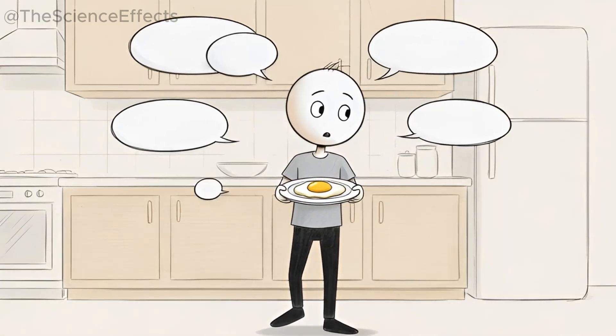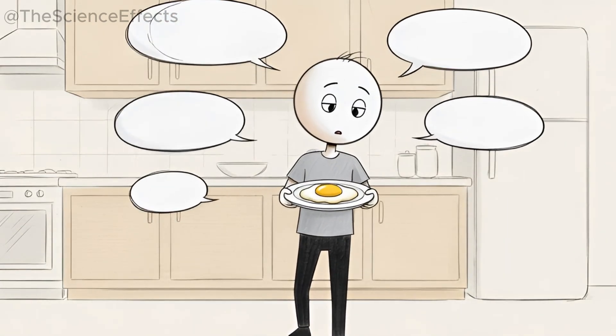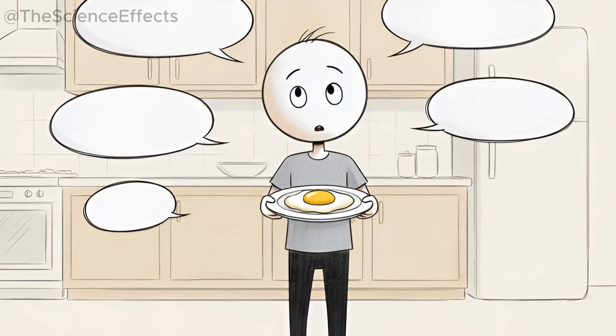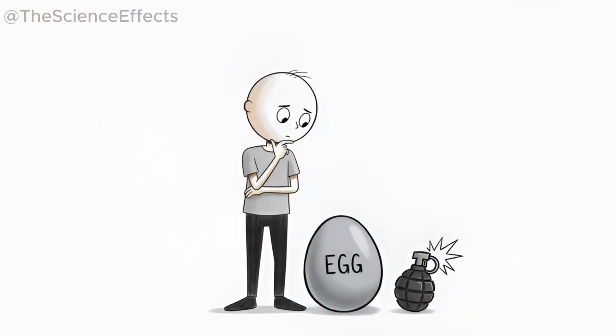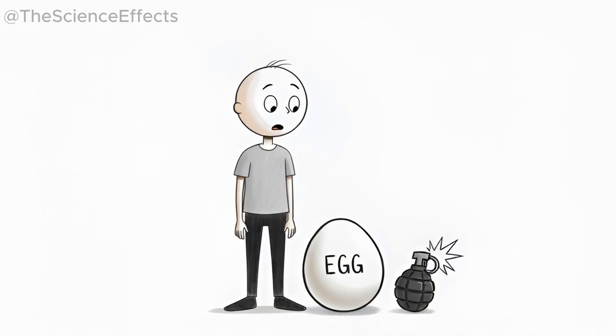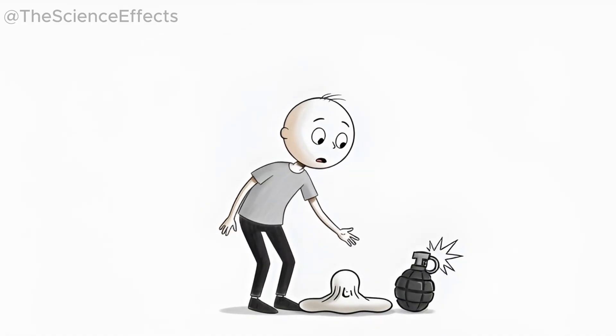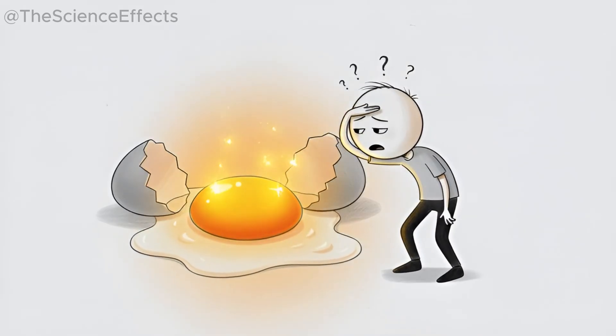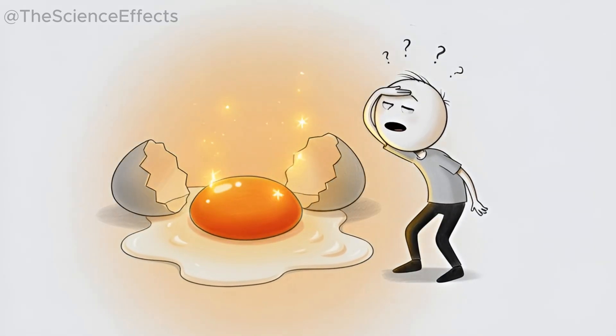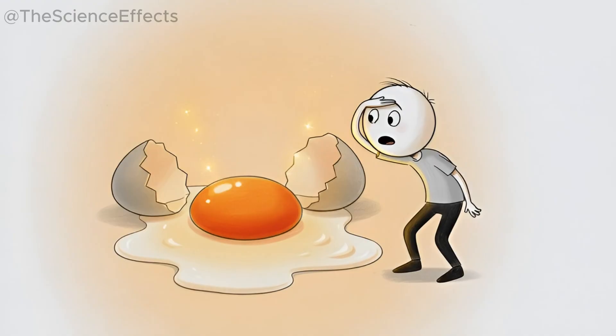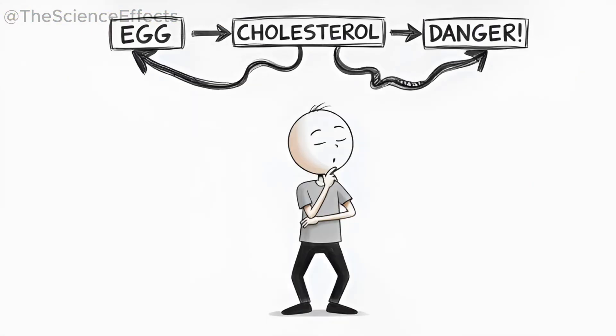You've heard this warning your whole life: don't eat eggs every day, they'll clog your arteries. Everyone says it—your relatives, your doctor, random people online. And eggs do feel suspicious. The yolk is bright yellow, rich, and almost too perfect. It looks like something that should be bad for you.